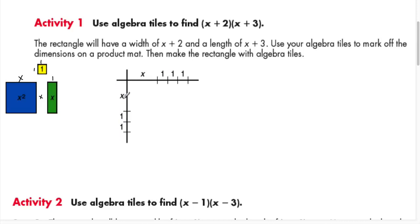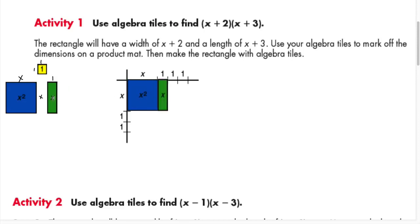Multiplying x times x gives us an x² tile — put it there. Multiply x times 1, you get an x tile. x times 1 again gives another x tile. x times 1 is also an x tile. So the top row fills in with one x² tile and three x tiles.